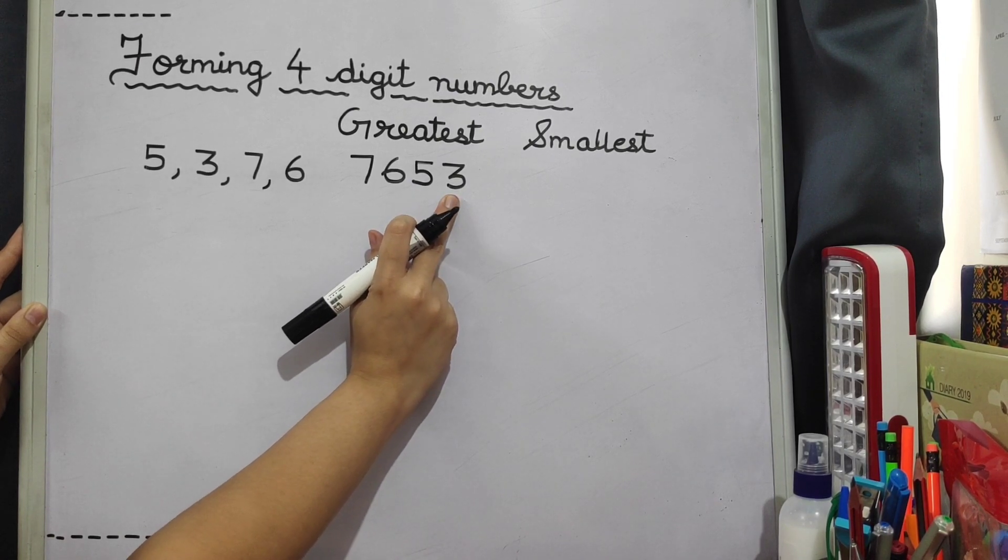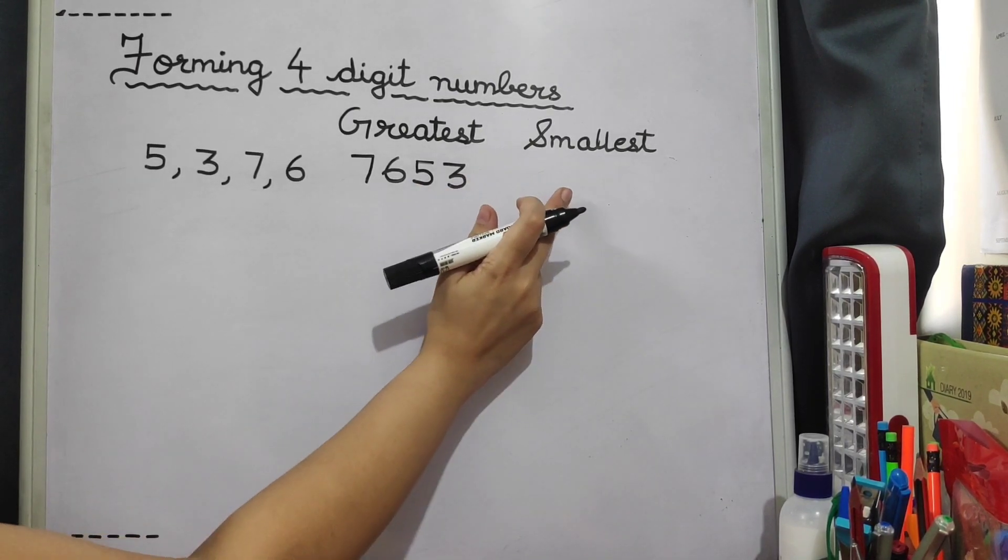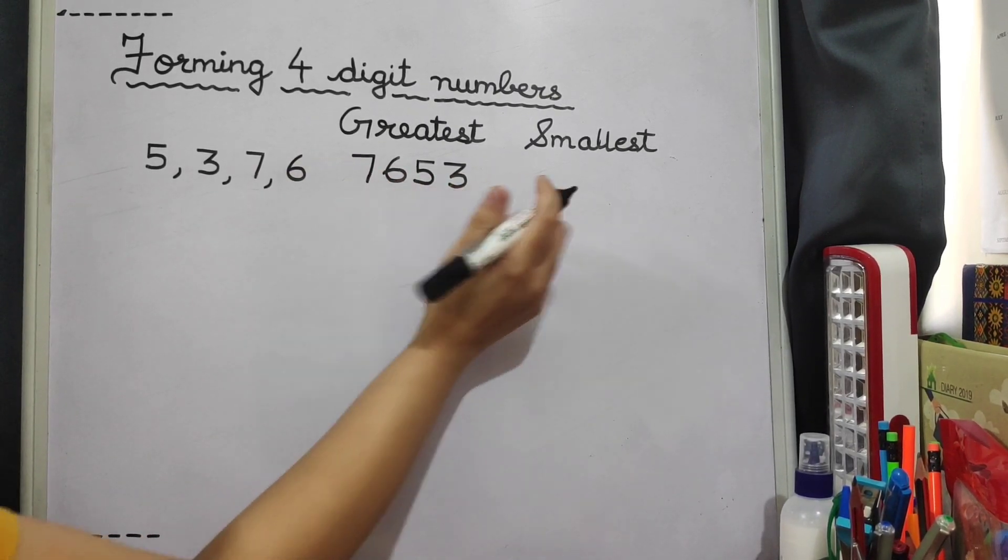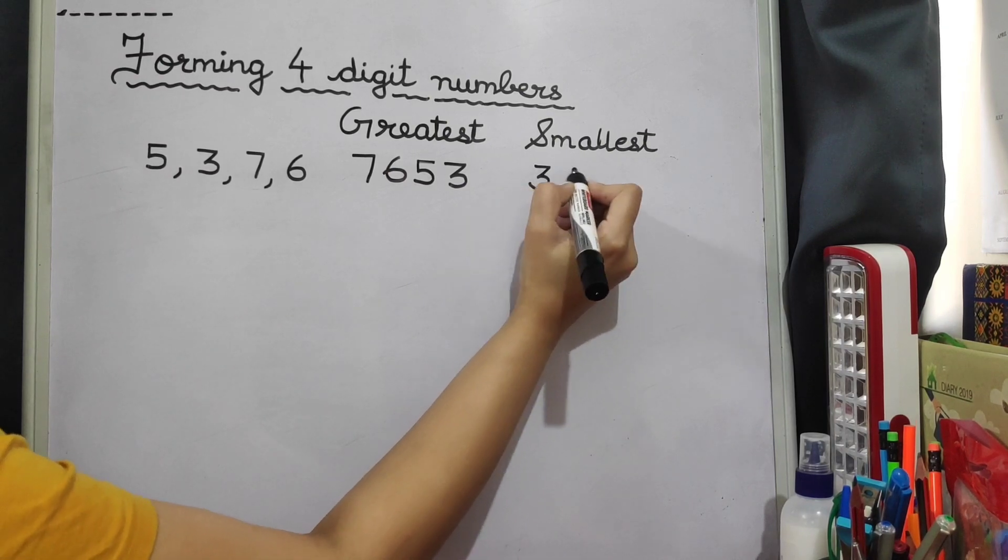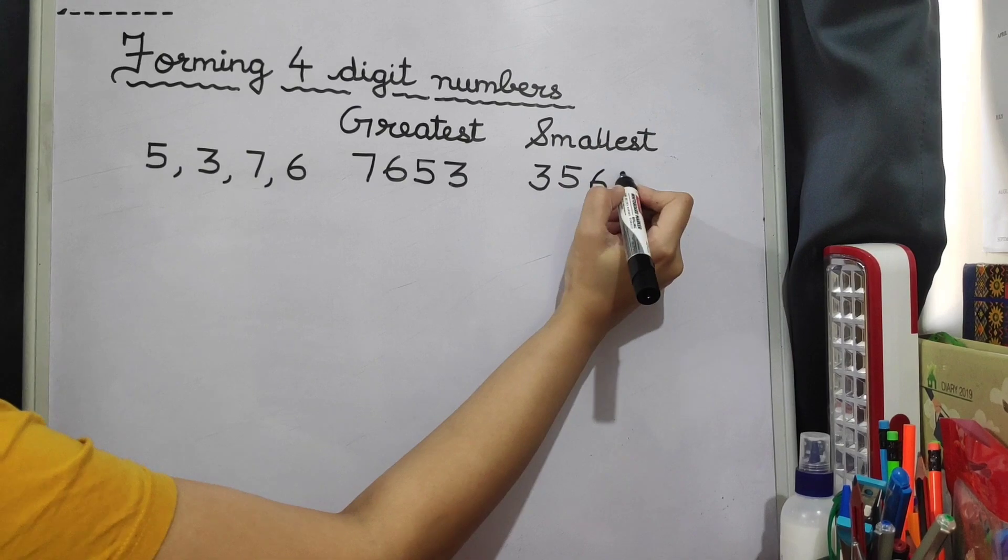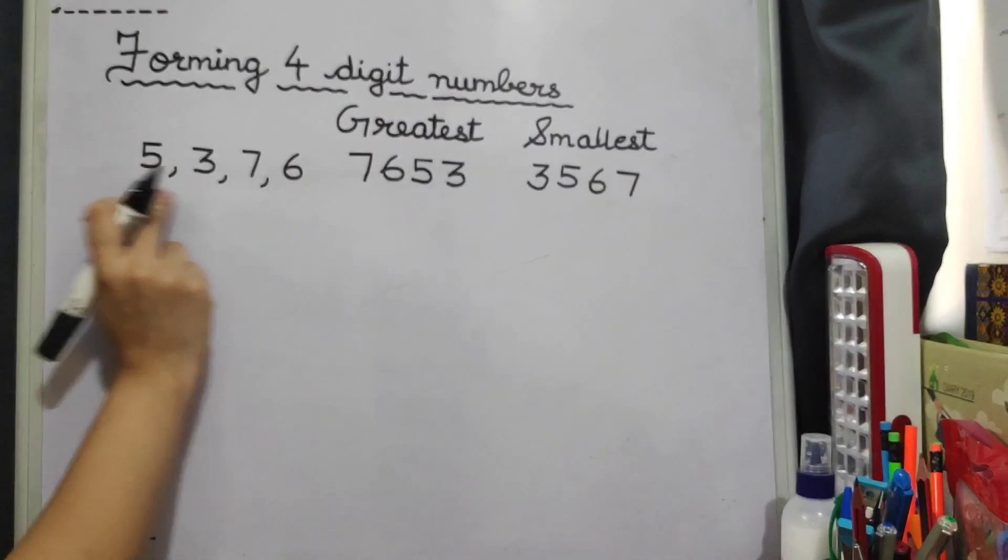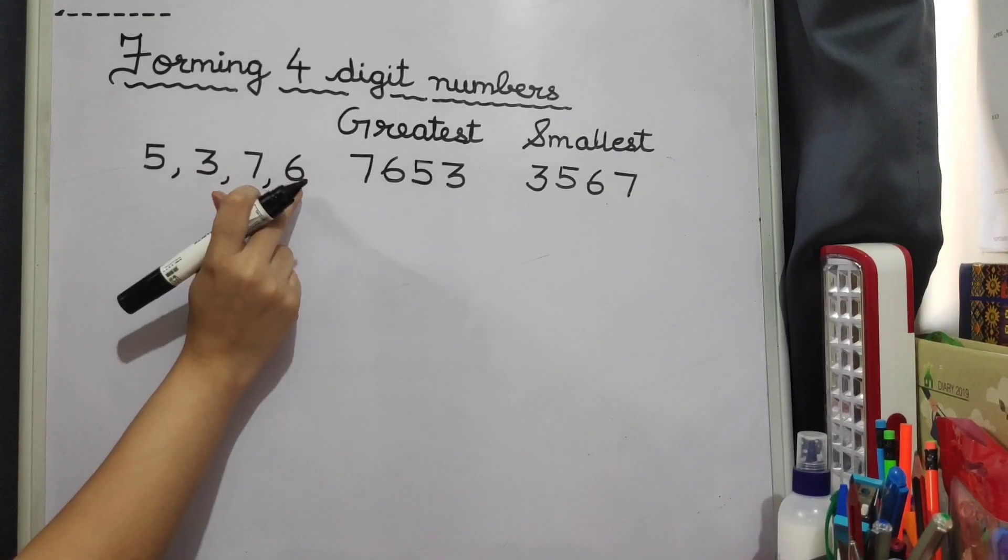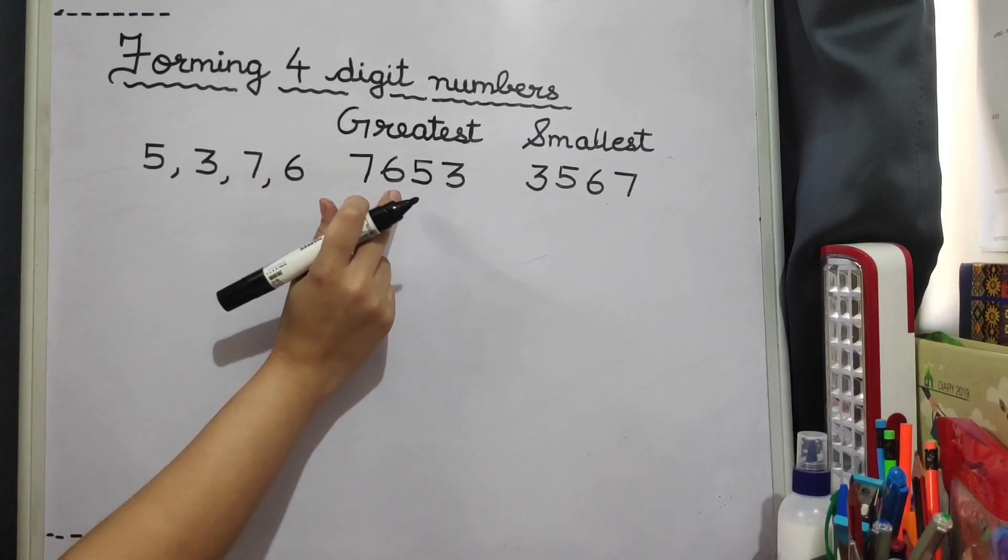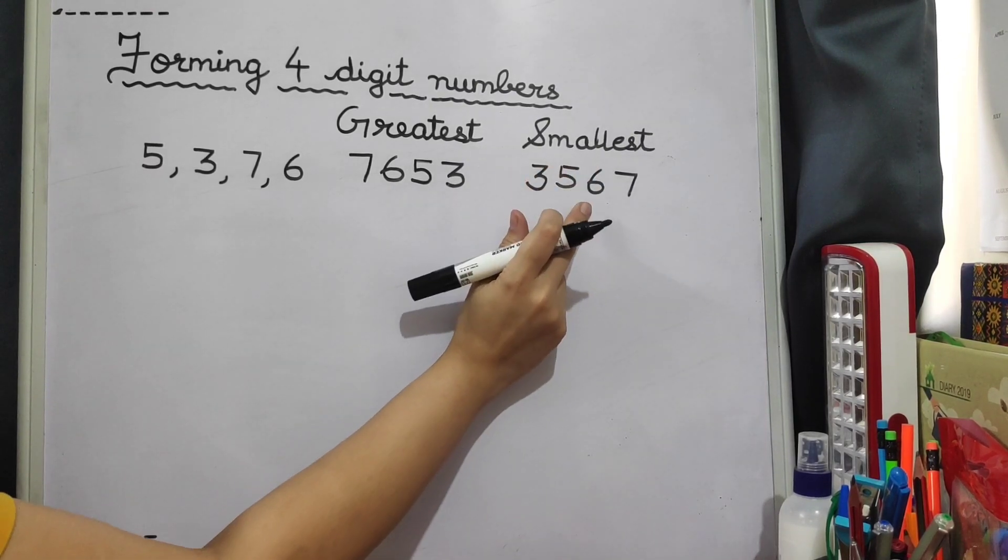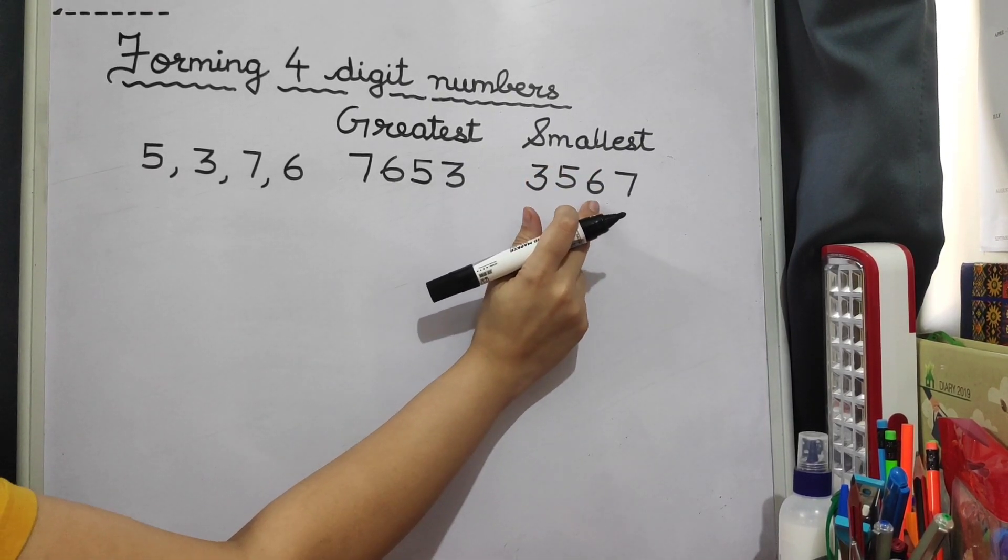Now similarly for the smallest number will be 3567. For this you need to start with the smallest number out of the given digits. Three is the smallest, then five, then six, then seven. So the greatest number is 7653 and the smallest is 3567.